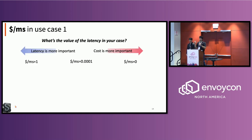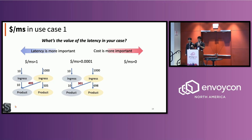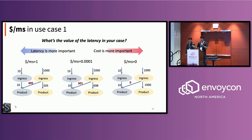The dollar-per-millisecond metric is a way to express what the value of latency is in your case. If latency is super important, the value of this metric is higher. Take this topology — if the right cluster has 1,000 requests and the left has 10, one is much more overloaded, and if you don't care about cost you'll route as many requests as possible to the remote cluster, roughly 50-50. However, as this value goes down, you route less and less away until you really care about cost and route everything locally. It's a nice spectrum to express how much you value latency.